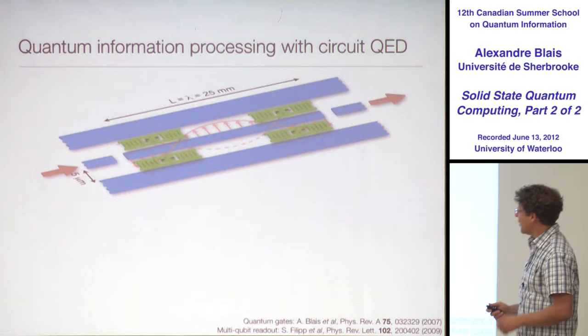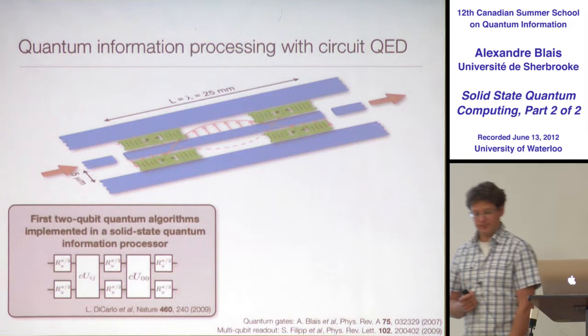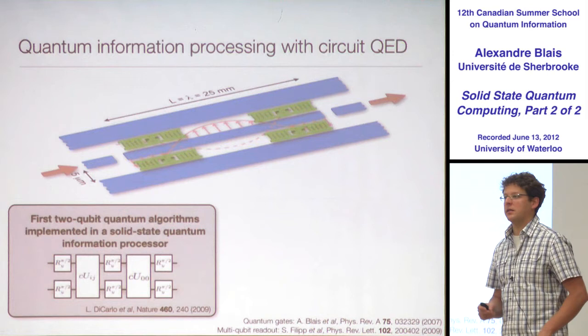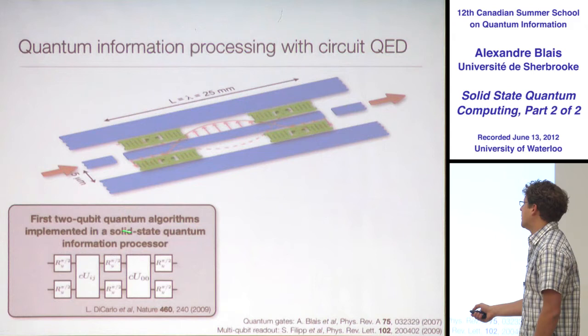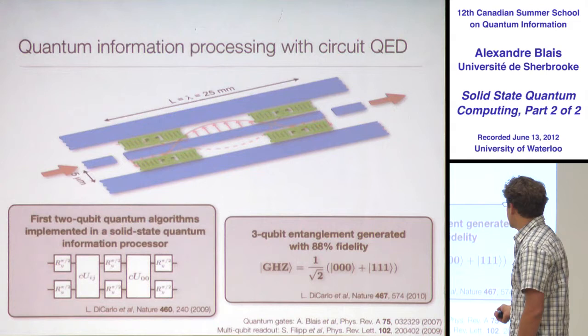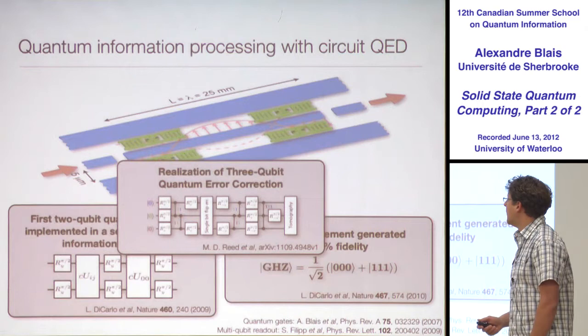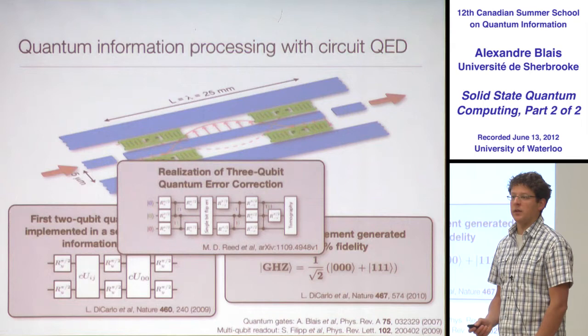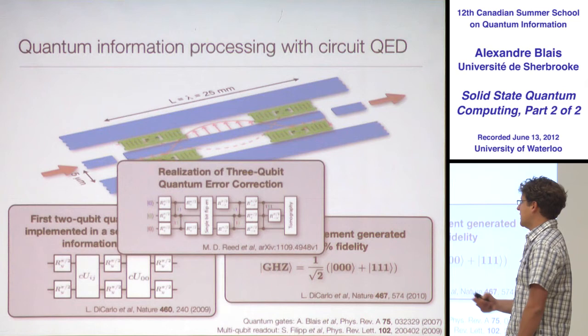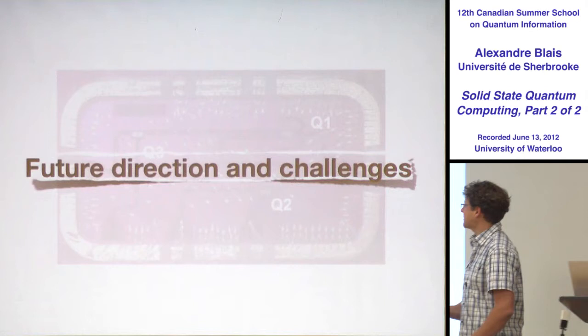For two-qubit gates, you can transfer an excitation from one qubit to the cavity using sideband pulses — similar to the ion trap talk — and have it absorbed by another qubit, mediating entanglement. Results include Deutsch-Jozsa and Grover algorithms implemented on a two-qubit system — the first quantum algorithm implementation in a solid-state processor. Moving to three qubits, the Yale group realized GHZ states and implemented the first steps of three-qubit error correction.